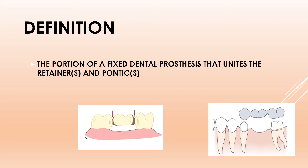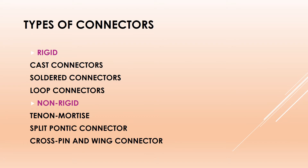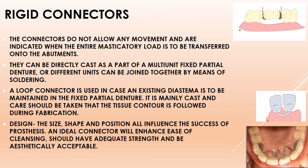The connector connects the retainer and the pontic. There are basically two types: rigid and non-rigid. Rigid connectors are immovable, while non-rigid ones have slight movement. Rigid connectors are of three types: cast, soldered, and loop. Non-rigid types include tenon-mortise, split pontic, and cross pin and wing connectors.